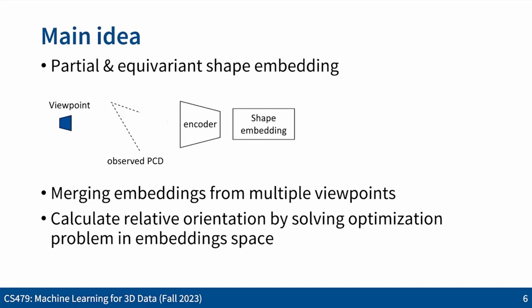Our main idea: we first encode the observed partial point cloud from one viewpoint into local shape embeddings. These embeddings are trained with local occupancy queries rather than query points from the entire shape. We then introduce a merging operation in embedding space to merge embeddings from multiple viewpoints into one for the full shape. Finally, we calculate relative orientation by solving a nonlinear optimization problem in embedding space, using all correspondences between the two embeddings.